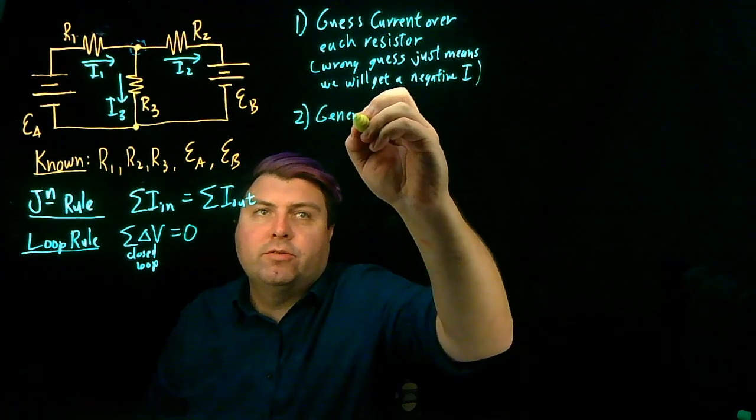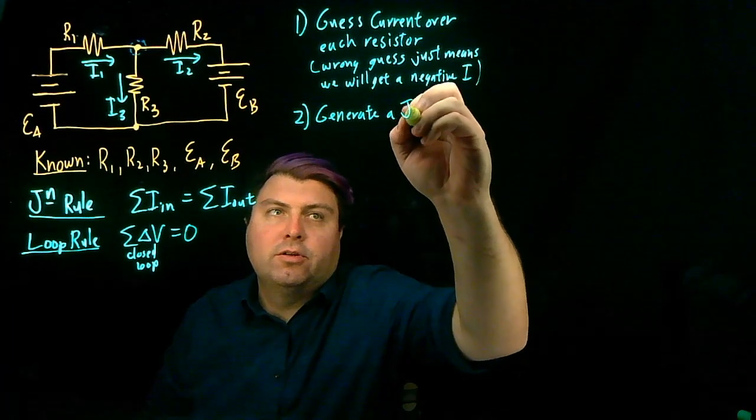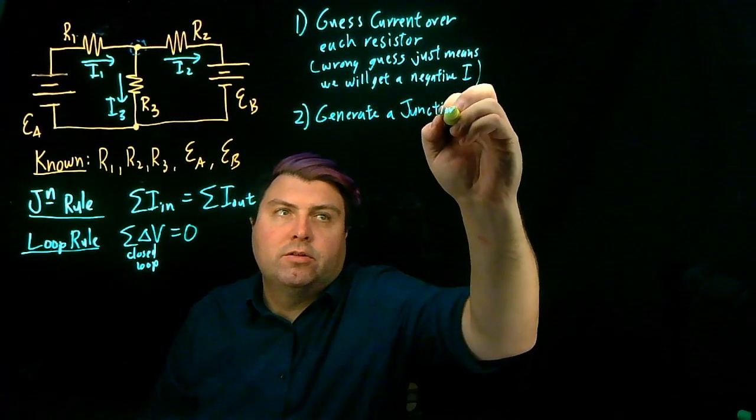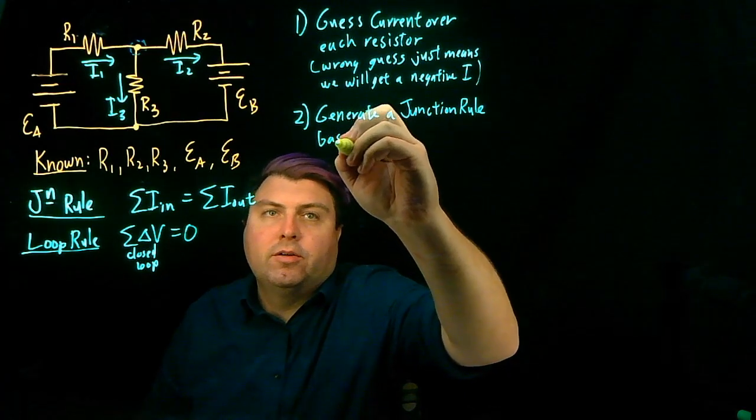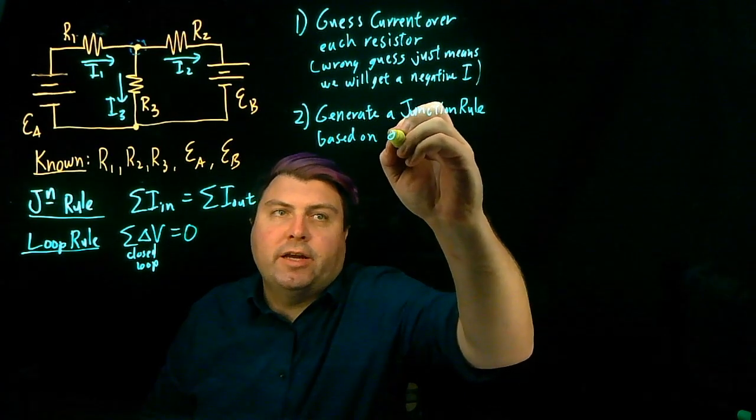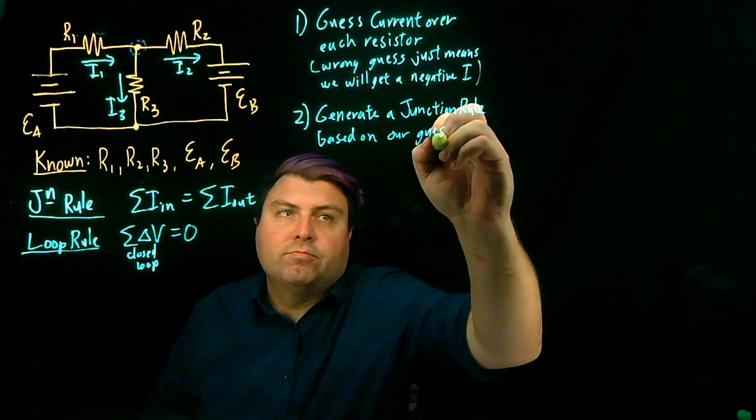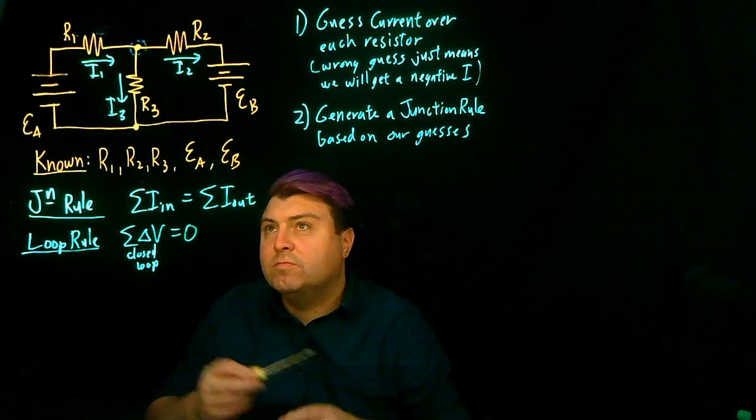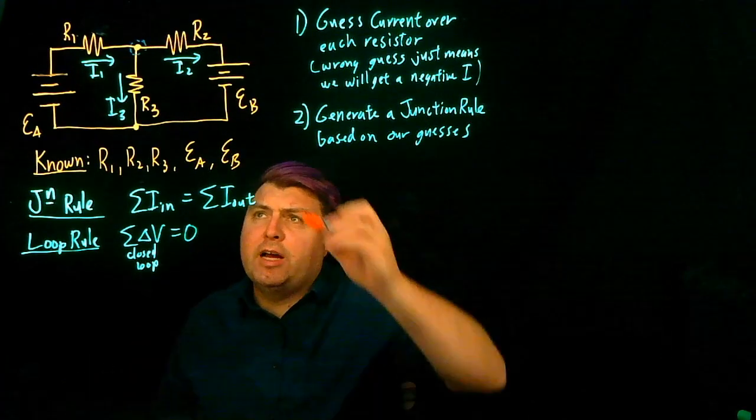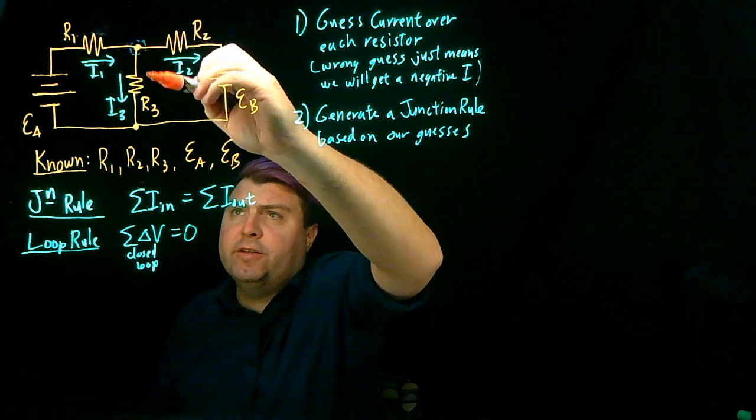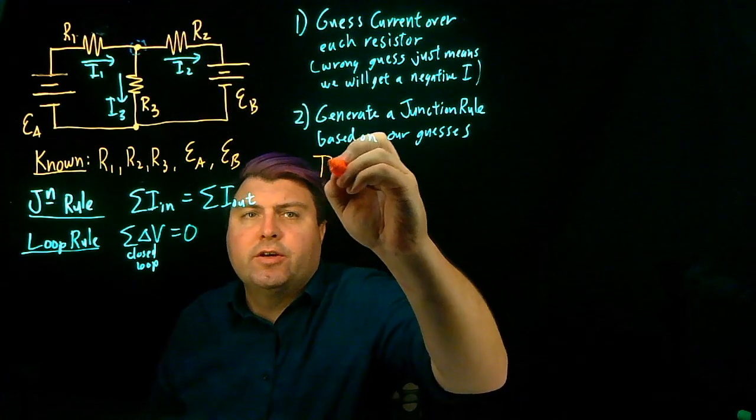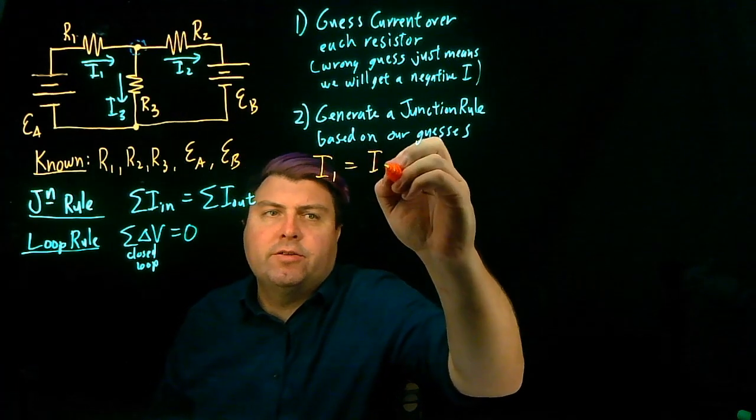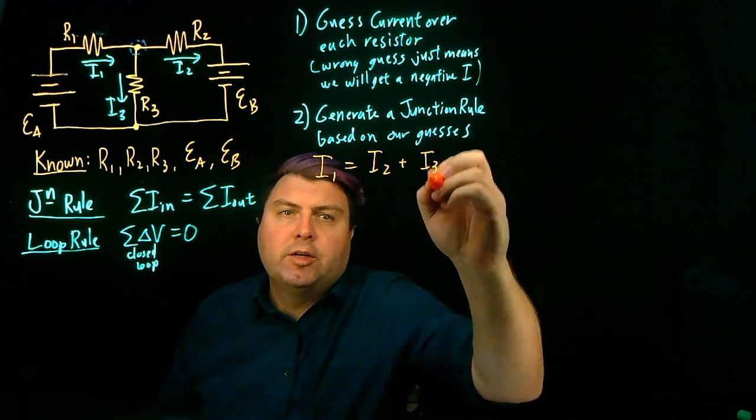So looking at this junction rule, I have I1 is coming into the junction, and I2 and I3 are coming out of the junction. So I have I1 is equal to I2 plus I3.